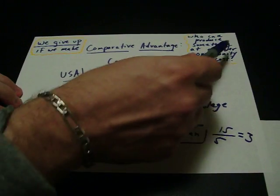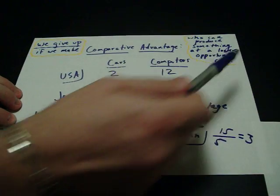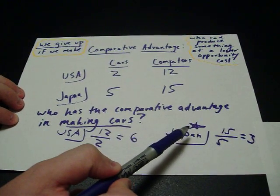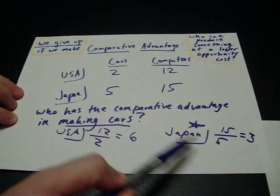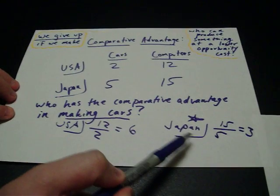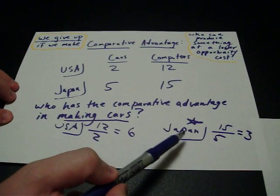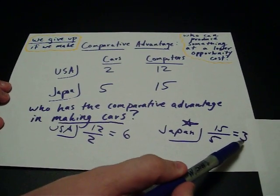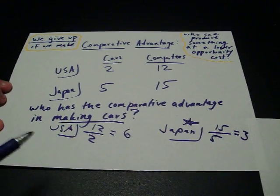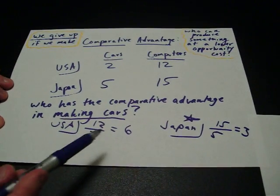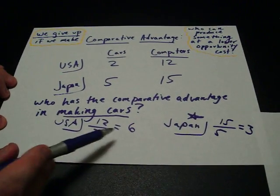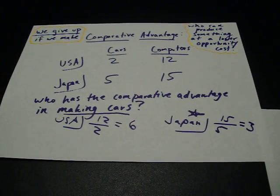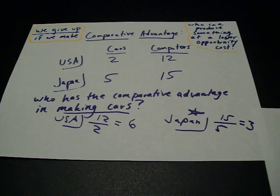Comparative advantage is who can produce something at a lower opportunity cost. Therefore, Japan would have the comparative advantage in producing cars — they only give up 3 computers, while the United States has to give up 6. That's the opportunity cost.